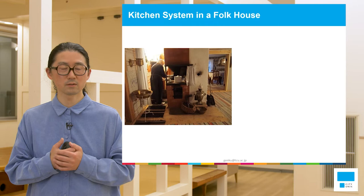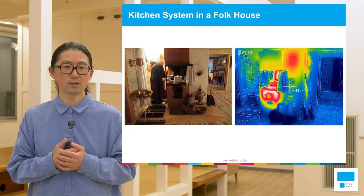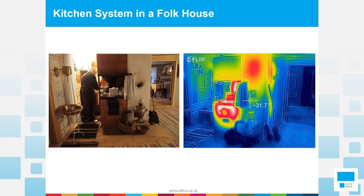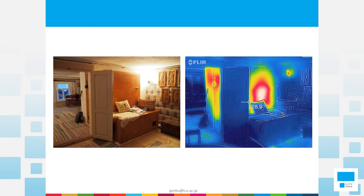This is a kitchen system in a folk house, with one lady cooking some food at the stove. With thermal cameras, you can see where the heat is located. The stove radiates heat, and part of the chimney radiates heat from the surface. On the back side of the kitchen system, you can see the living room. Near the sofa where they sit, the back surface is heated by the chimney system as radiative heat.